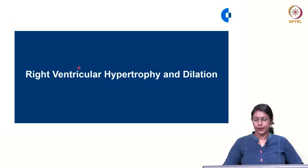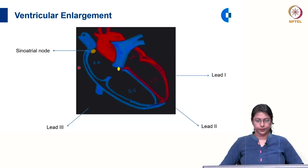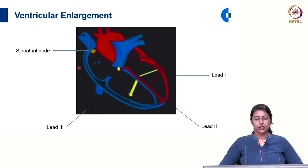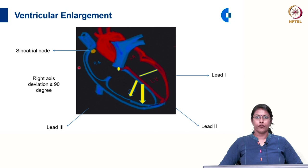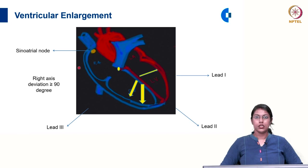Now let us see right ventricular hypertrophy and dilatation. In right ventricular hypertrophy, there is a stronger right ventricular vector which shifts the net QRS axis rightward or clockwise, giving right axis deviation of more than or equal to 90 degrees. Normally the left ventricular muscle mass is much greater than the right ventricle, so unless the right ventricle is severely hypertrophied, this degree of axis deviation will not appear in the ECG.